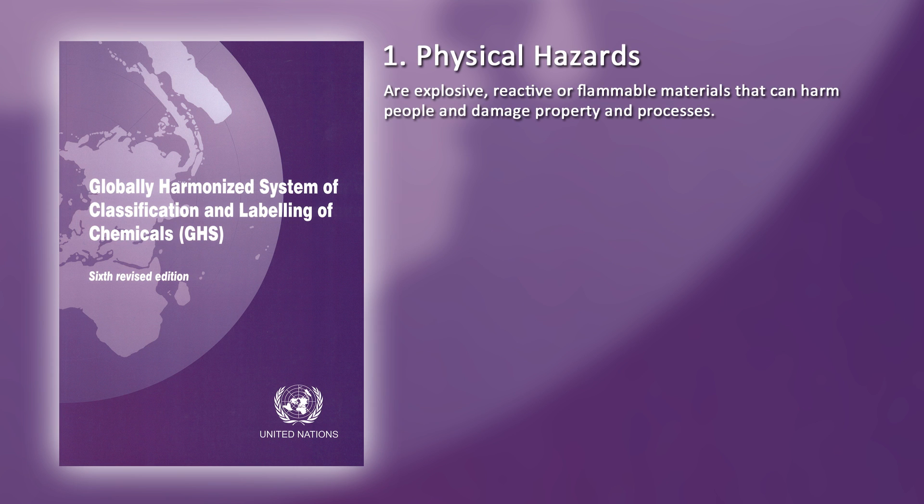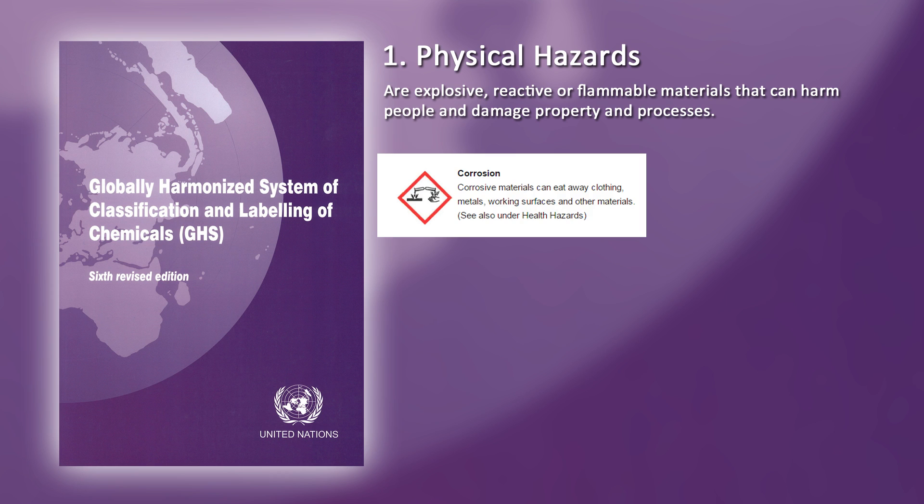Physical hazards are explosive, reactive or flammable materials that can harm people and damage property and processes. Symbols in this category include Corrosion. Corrosive materials can eat away clothing, metals, working surfaces and other materials.